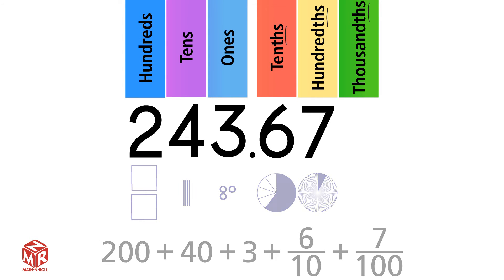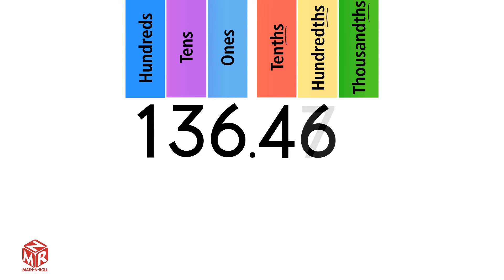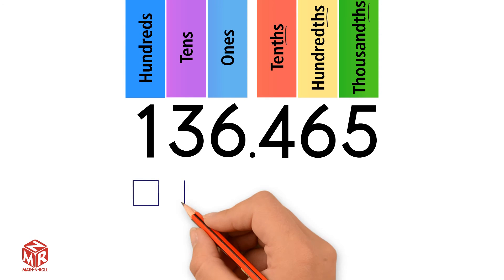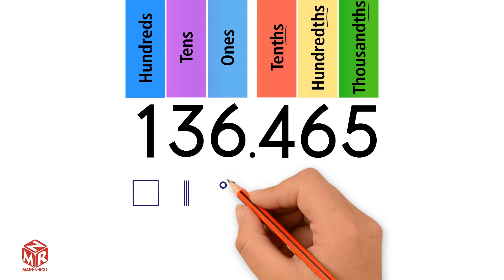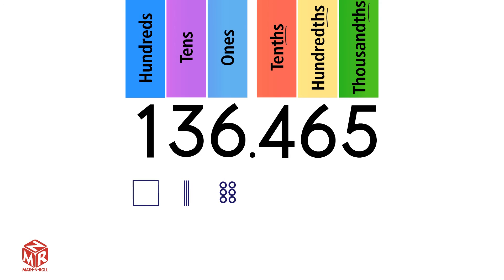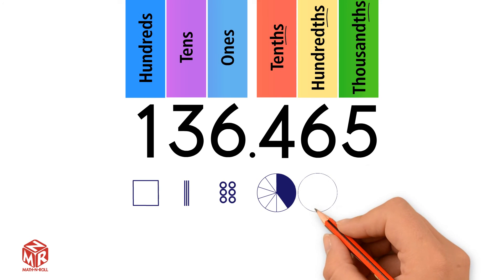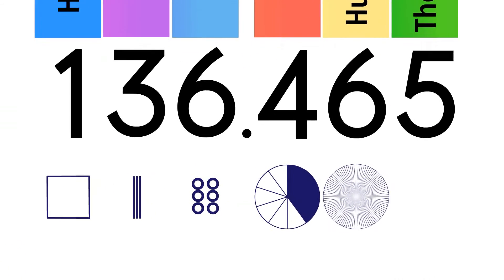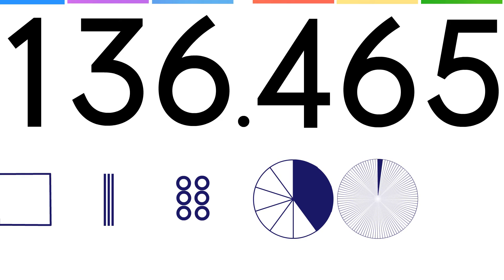Let's do another example: 136 and 465 thousandths. Let's draw it out. We have 100, 3 tens, 6 ones, 4 tenths, 6 hundredths, and 5 thousandths.